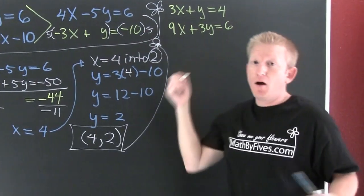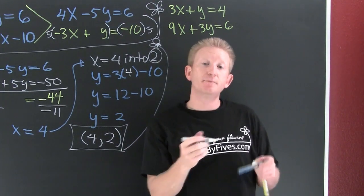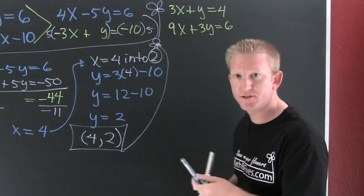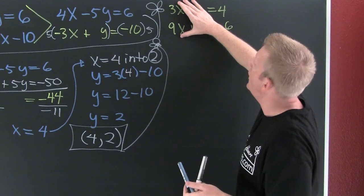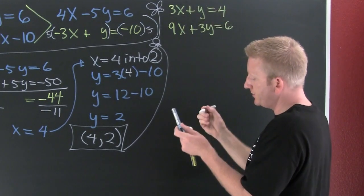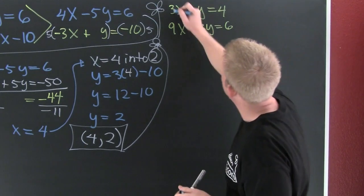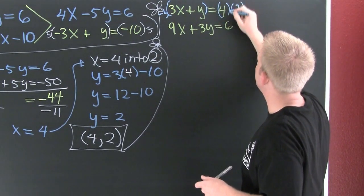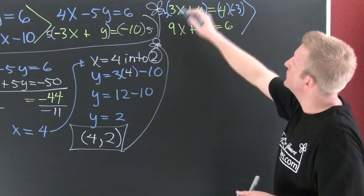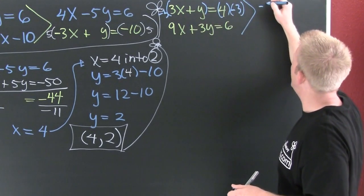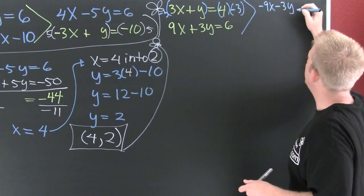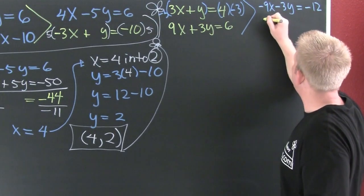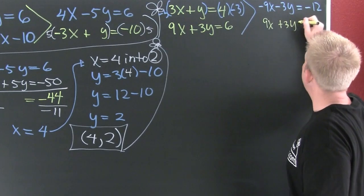Moving to the next example, which is already in standard form. I need to pick a variable to eliminate — let's eliminate x this time, just for some flavor. To get additive inverses, I'm going to multiply the top equation by negative 3. That gives us negative 9x minus 3y equals negative 12. I didn't change the second equation — leave it alone: 9x plus 3y is 6.